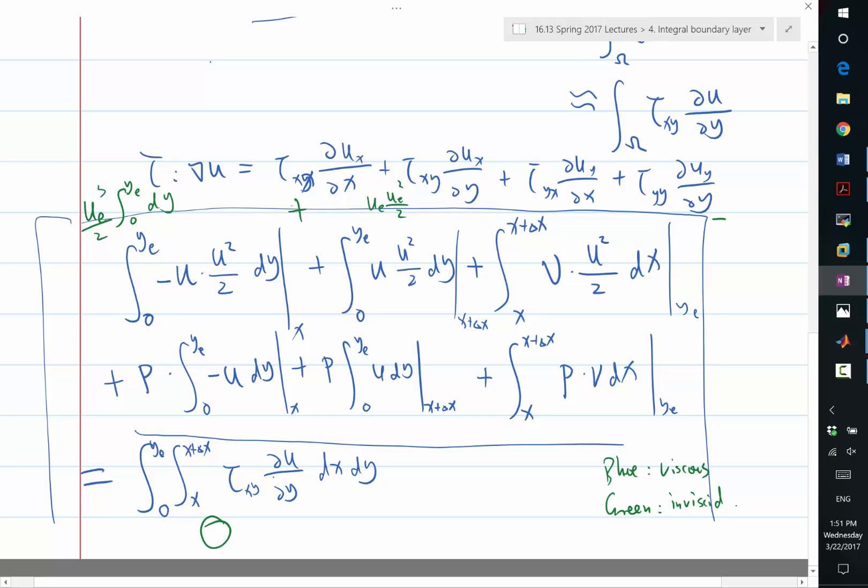The additional term at the wall is going to be integral from x to x plus delta x of v at the wall times ue squared over 2, dx. So this is the term that the inviscid fluid has, but the viscous fluid does not have.